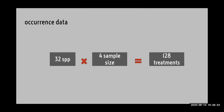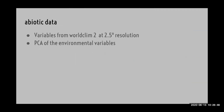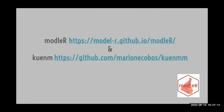So we're going to take our 32 species with those four sample size treatments, and that's going to create 128 sets of models to develop. We thought to make things even more complicated — I'll show you that in a moment. We're using data from WorldClim 2 at 2.5 minute resolution, and we collapsed the environmental variables into fewer dimensions using a principal components analysis. We've used Modeler and KUENM to calibrate models — you've already heard talks about both of those approaches, so I'm not going to go into detail.